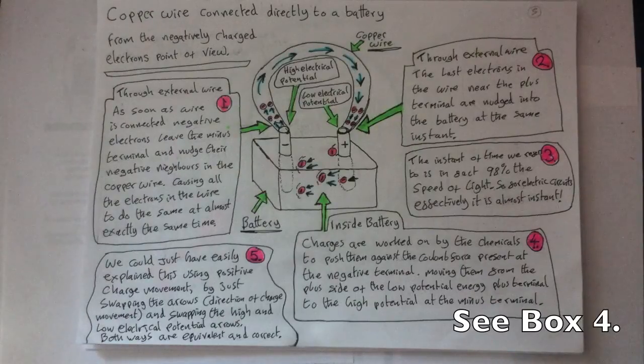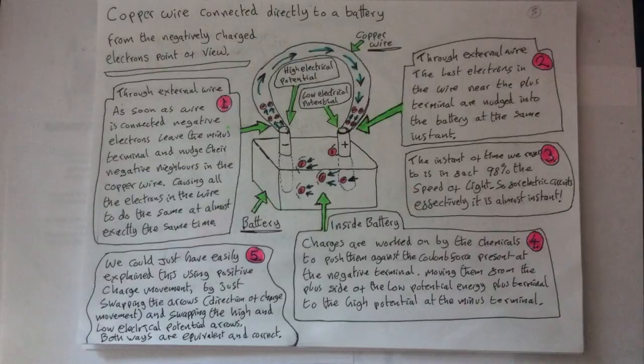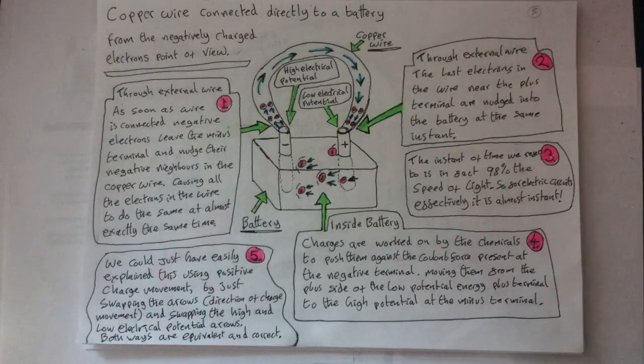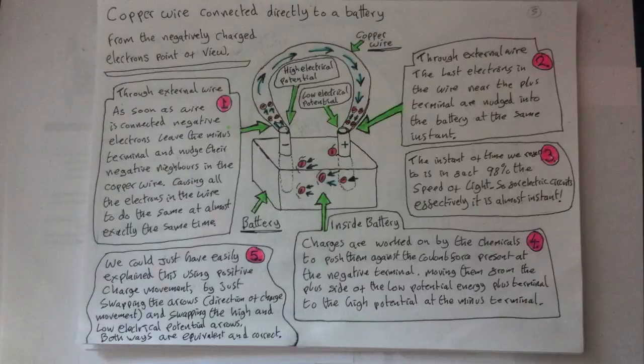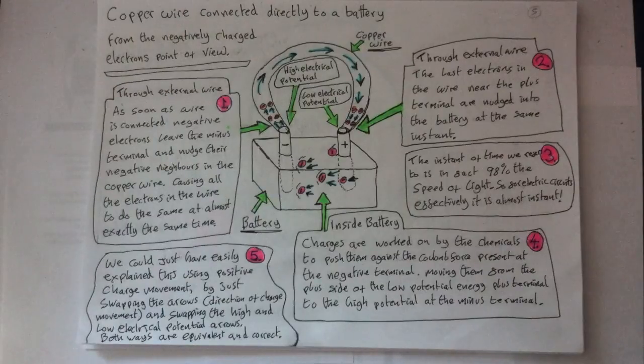Now we can think of the internal chemistry of the battery as moving all these charges through the battery against the repulsive Coulomb forces of the opposing battery terminal. The work done to do this, then, is supplied by the battery's electrolytes and hence gives all the charges that get moved through the battery back up to a higher potential energy, ready again to nudge their neighbor's charges through the external circuit.